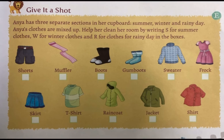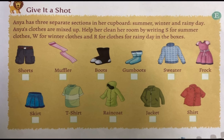Let's move forward to an exercise. Ania has three separate sections in her cupboard: summer, winter, and rainy day. Her clothes are all mixed up. Help her clean her room by writing S for summer clothes, W for winter clothes, and R for rainy day clothes in the boxes. First is shorts — we wear shorts in the summer season, so write S in the box.